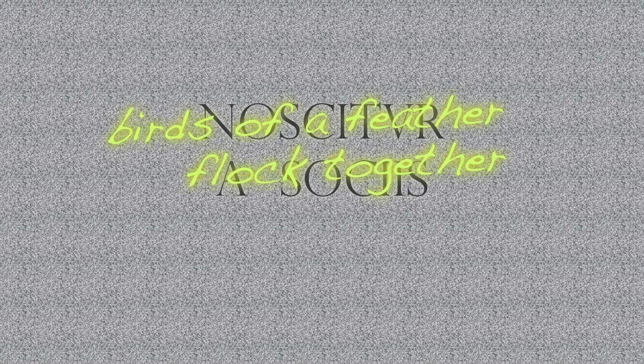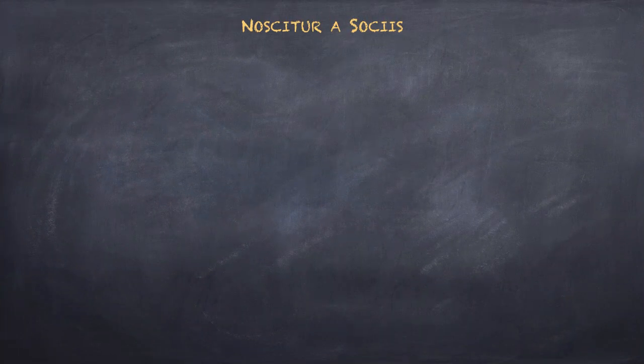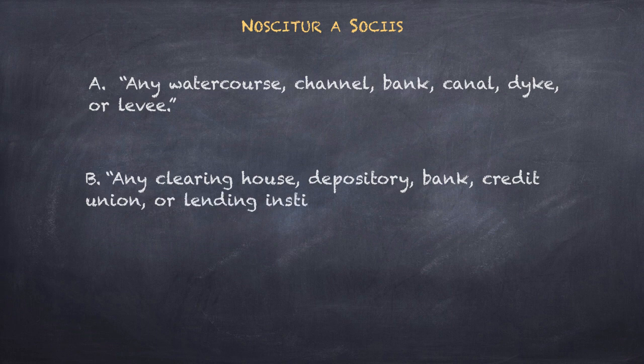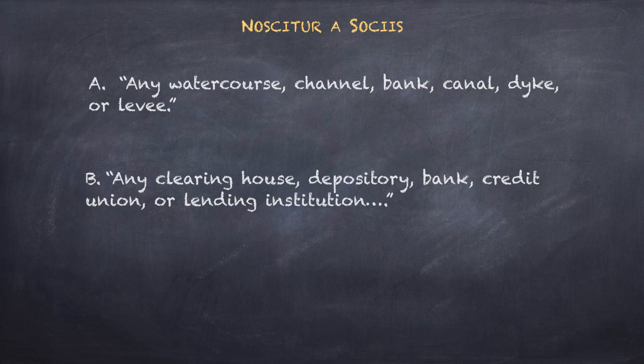For example, the word 'bank' can mean financial institution, or it can mean riparian boundary. Consider these two lists. List A: any watercourse, channel, bank, canal, dike, or levee. List B: any clearinghouse, depository, bank, credit union, or lending institution. Obviously, 'bank' has different meanings in A and in B. Noscitur a sociis indicates that in A, 'bank' means riparian boundary, and in B, financial institution. The maxim tells us not only to pay attention to context, but what to make of it.